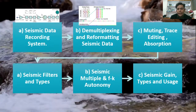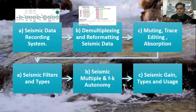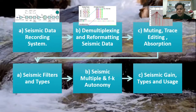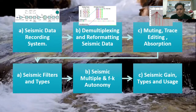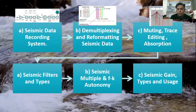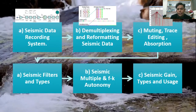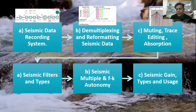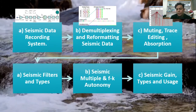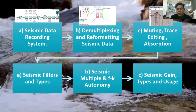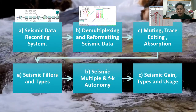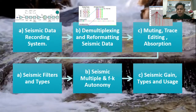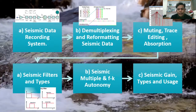The third video will be focusing on muting, trace editing, and absorption as well. If you encounter some bad geophone or there was a dead trace because of some abnormal receivers, you can address and remove those in that step.